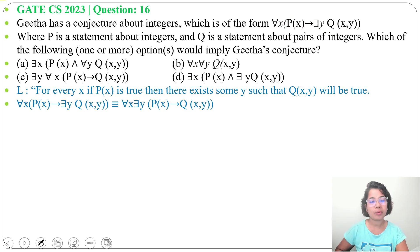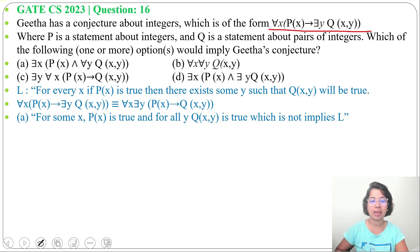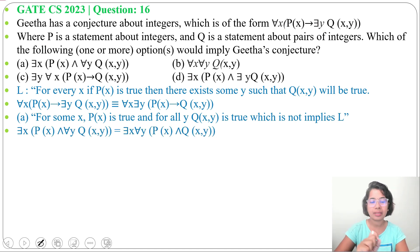Now we'll check one by one which option's premises can conclude this. Option A: there exists x, P(x) and for all y, Q(x,y). So for some x, P(x) is true and for all y, Q(x,y) is true — which doesn't imply the conjecture.